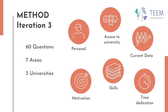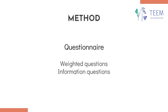This questionnaire is divided into six blocks: personal data, motivation, access to university, current data, career choice, and time dedicated to study. The questionnaire contains 33 weighted questions, which provide the weighting to predict possible dropout, and 17 informational questions, which provide a more concrete picture to the student's tutor.